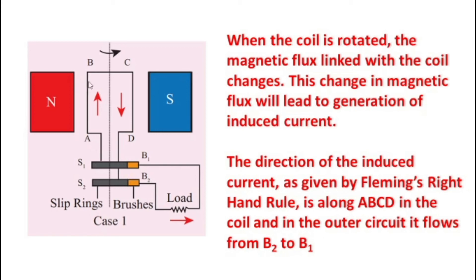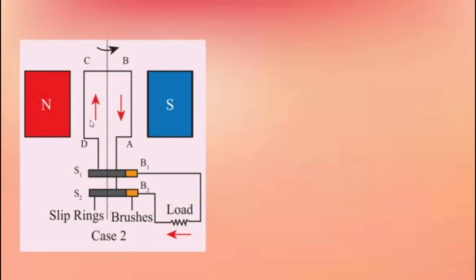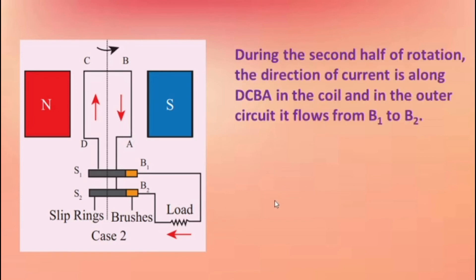When ABCD is the current direction in the coil, in the outer circuit it flows from B2 to B1. In the second half rotation, after the first half, the direction of current changes to DCBA. There is a change in the magnetic flux when the coil changes position relative to the permanent magnet. This changed magnetic flux produces the induced EMF, which produces the induced current in the coil. That current flows B1 to B2 in the second half rotation.